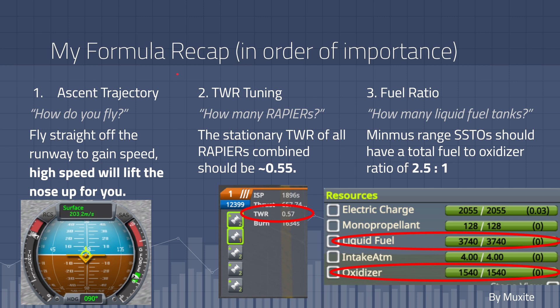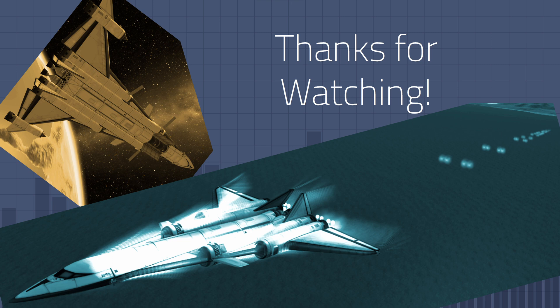Now to recap in order of importance for the formula. First, ascent trajectory: fly straight off the runway to gain speed and the high speed will lift the nose up for you. Thrust to weight ratio tuning: stationary thrust to weight ratio of all rapiers combined should be about 0.55. Fuel ratio: Minimus range SSTOs should have a total fuel to oxidizer ratio of 2.5 to 1. That's the end of the SSTO formula video. Thank you so much for watching. If you liked it make sure to leave a like. Goodbye.